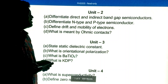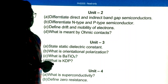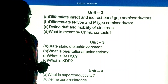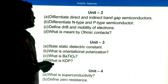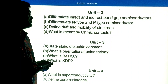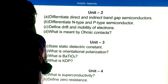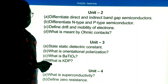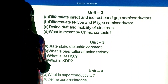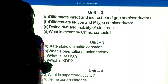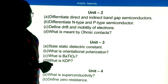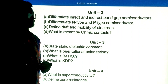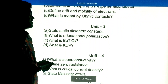Unit 2 Part A important questions: Differentiate direct and indirect band gap semiconductors. Differentiate n-type and p-type semiconductors. Define drift and mobility of electrons. What is meant by ohmic contacts?